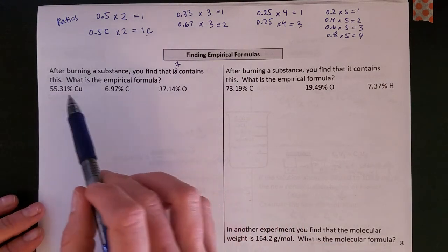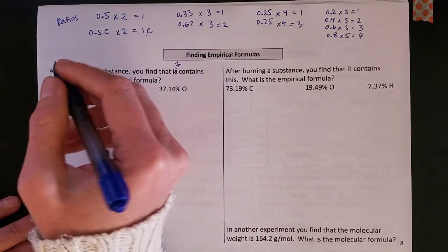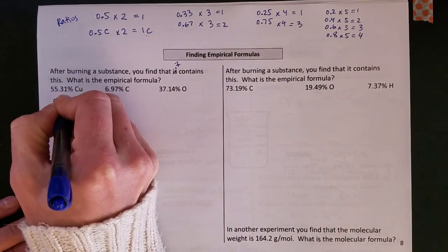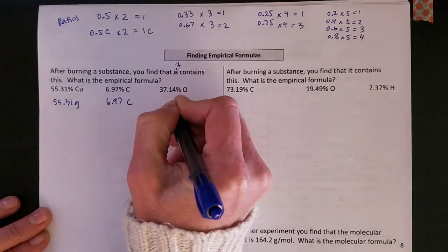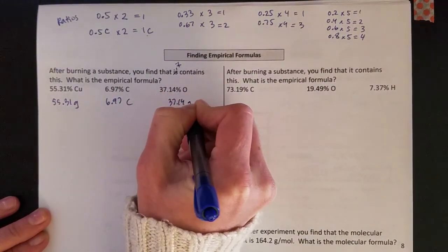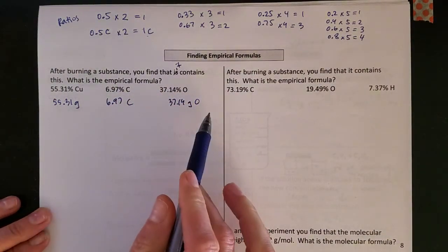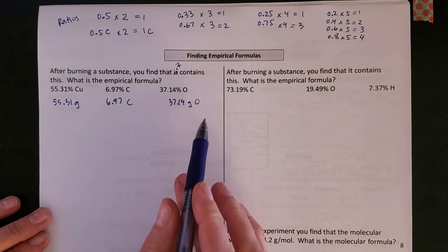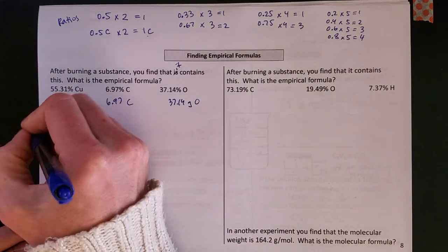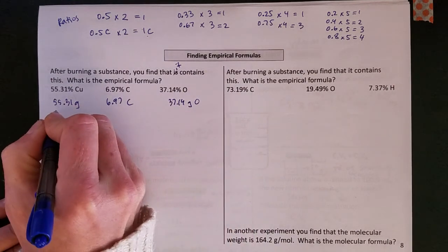So the first thing that we do is we take these mass percentages and just turn them into masses. We've converted them each to masses, keeping the same digits, and then the next thing that we want to do with each of them is convert them into moles.